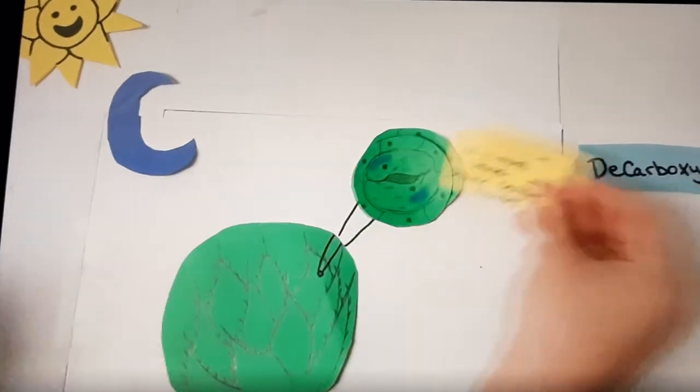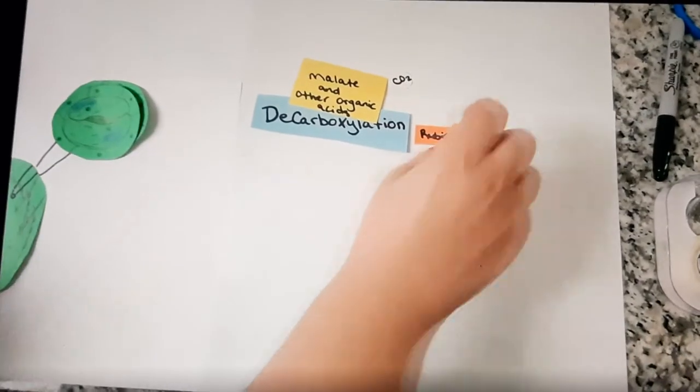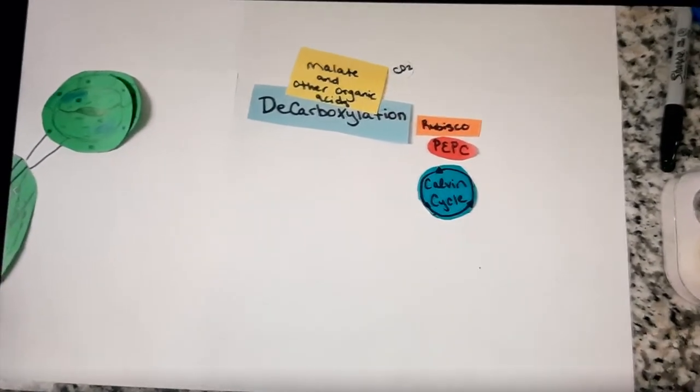The PEP carboxylase is then deactivated, allowing the Calvin cycle and Rubisco to begin.